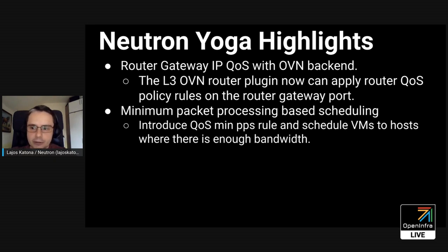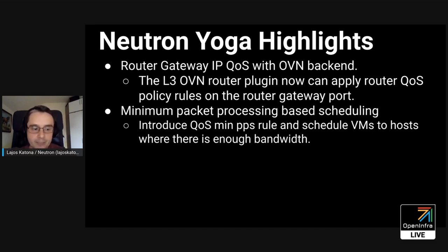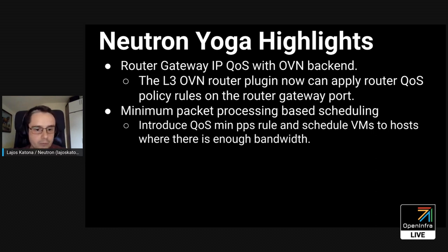There was another feature in this cycle for quality of service, and it was again a cross-project activity between Nova and Neutron. Like in the previous cycles where we added quality of service and scheduling available for VMs using minimum bandwidth, now you can define quality of service with minimum packet per second. You can schedule your VMs to hosts which have enough bandwidth in packet per second for that VM, giving even more granularity to schedule only to hosts where you have enough capacity and bandwidth.